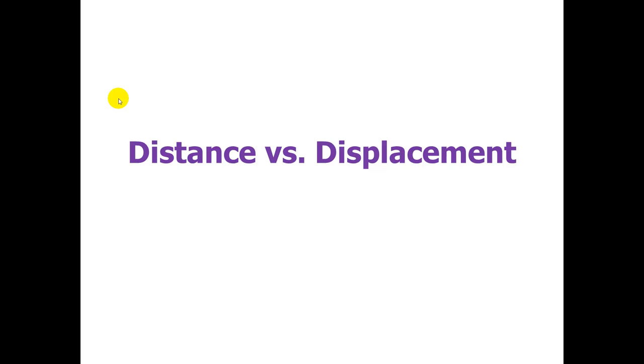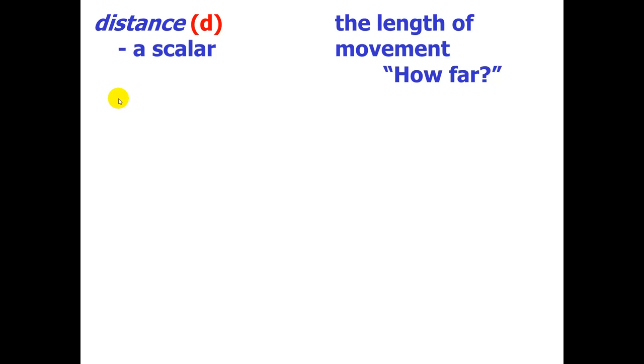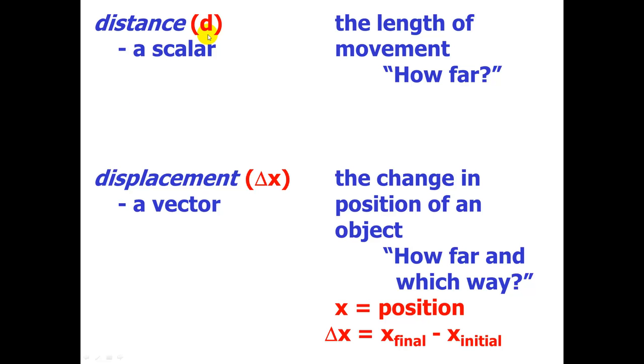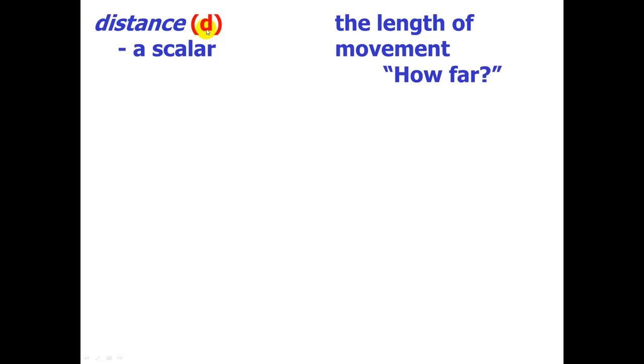Now, let's take a look at distance versus displacement. If I'm going too fast, pause the video as we go to give yourself a chance to get caught up. You should definitely write down those definitions that we just had. So, distance is a scalar. The symbol is lowercase d, and it means the length of movement. In other words, how far has something moved.